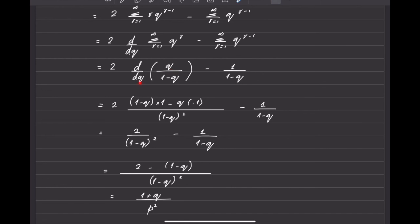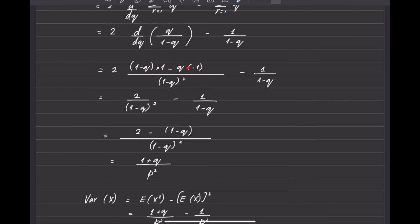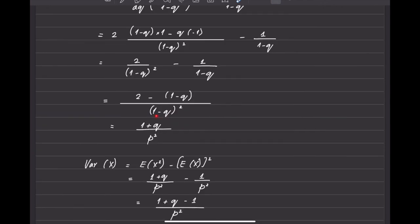After applying the geometric series formula to the first series I differentiate using the quotient rule — v into u prime minus u into v prime over v squared. The second series is copied as 1/(1 minus q). Simplifying the numerator of the first term gives 2 upon (1 minus q)² minus 1 upon (1 minus q). Taking the LCM and simplifying gives (2 minus 1 minus q) upon (1 minus q)² which becomes (1 plus q) upon p squared.